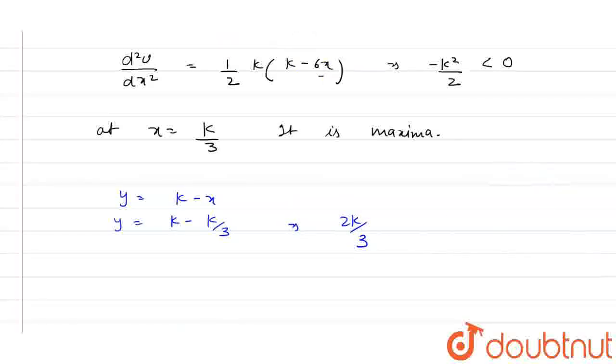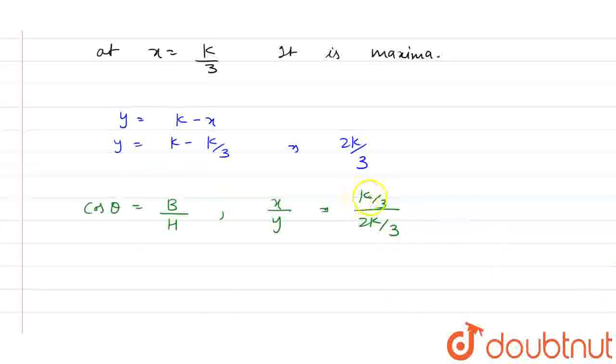Now we have to find the angle theta. So we know that cos theta equals base upon hypotenuse where value of base is X upon Y. Now by putting the value of X and Y that is K/3 and 2K/3, K to K cancel, 3 and 3 cancel, this becomes 1/2. So from here we can say that theta equals cos inverse 1/2 that is equal to π/3.